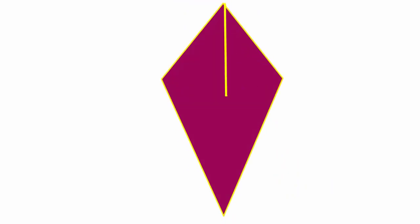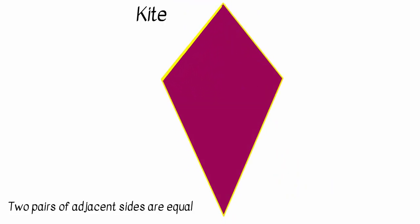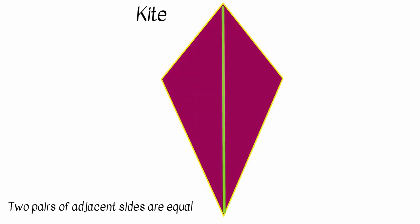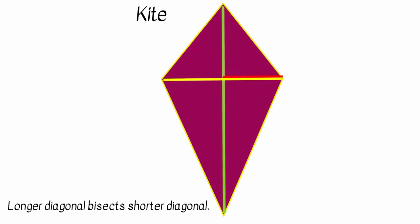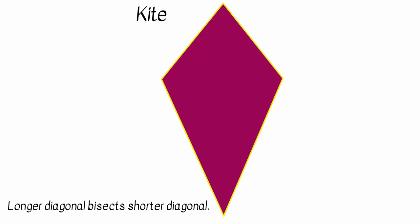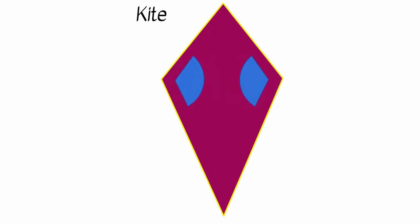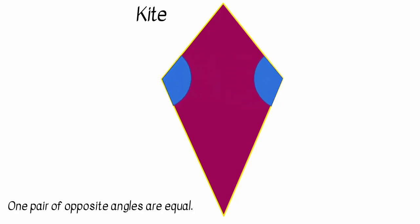Next we are going to see a special type of quadrilateral, as it has no pair of parallel sides. In a quadrilateral, if two pairs of adjacent sides are equal, what we get is a kite. The longer diagonal bisects the shorter diagonal at right angle. Only one pair of opposite angles are equal.